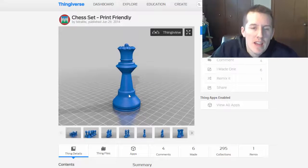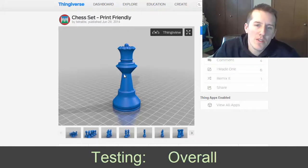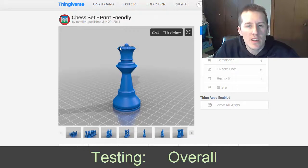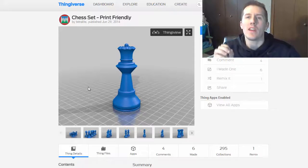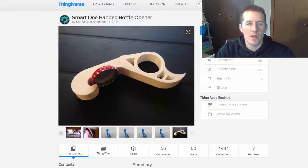The first one is this chest piece, and this is good because it has curved lines, it has a little bit of overhang, it has some detail here at the top. So you really have to have your settings dialed in to get a good part here. This is a good general part to print.